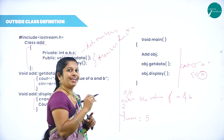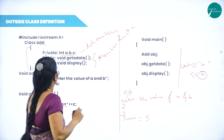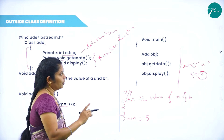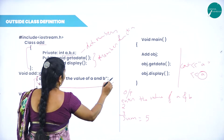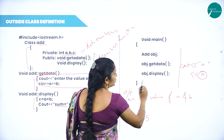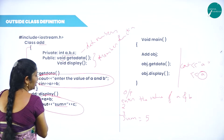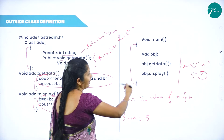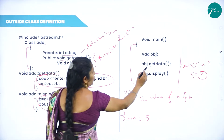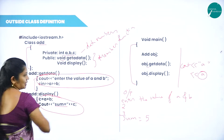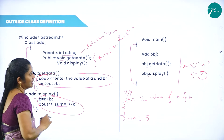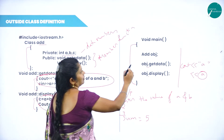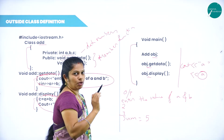In the main program, we are creating the object first — class name add, then object name. Then object dot get_data — when I write object dot get_data, this get_data function will execute automatically. Then object dot display — the display function will execute automatically, then we close the main program. I can access the functions by using the dot operator. Add is the class name, A B C are the data members, get_data and display are the member functions, these are the statements of each function, and we call the functions by using the dot operator.